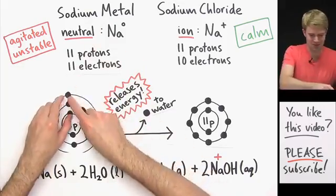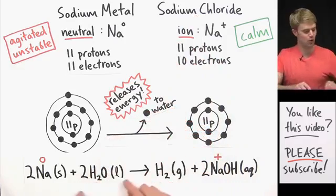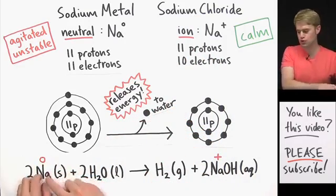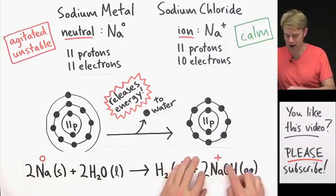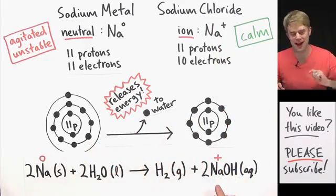This causes the sodium metal to release and give up this outer electron, give it to water, and that turns the neutral sodium into sodium ions with a one plus charge. These are right here. That's not the only thing that happens.